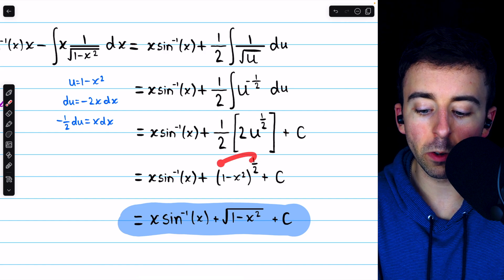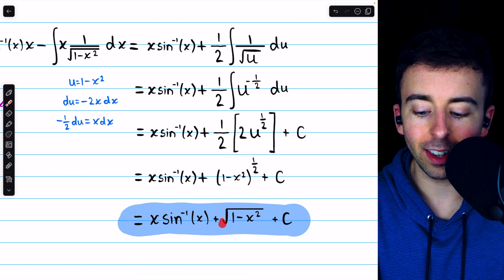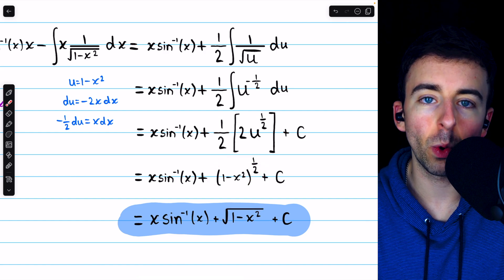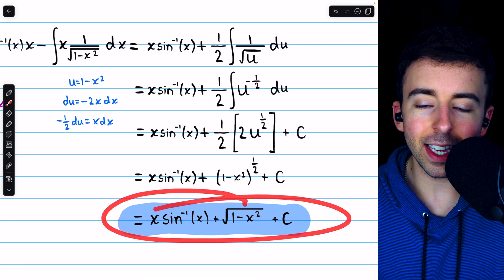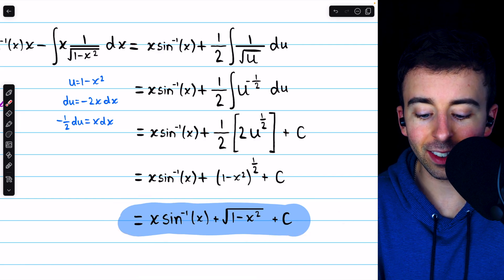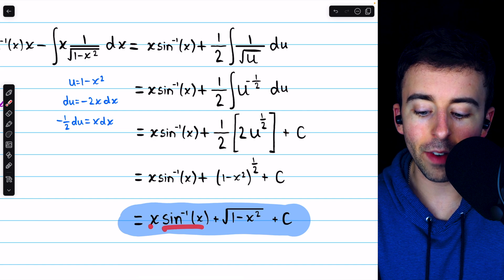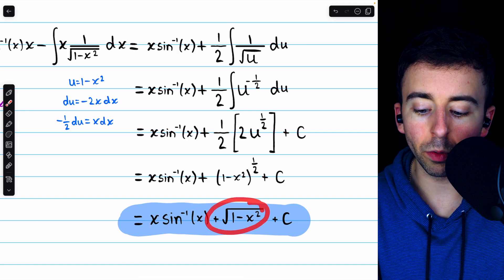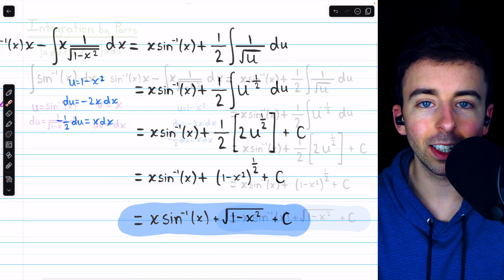And then finally, we may like to rewrite that rational exponent as a square root, since we had a square root to begin with. So there's our final answer. The integral of arc sine of x is x times arc sine of x plus the square root of 1 minus x squared plus the arbitrary constant.